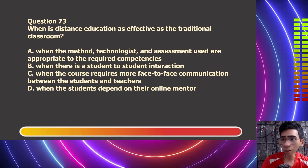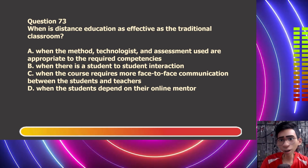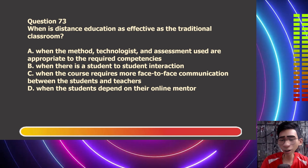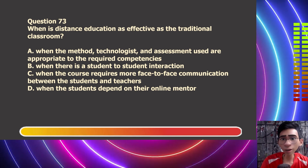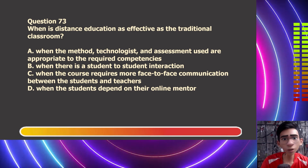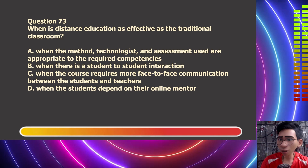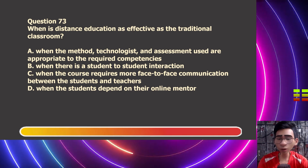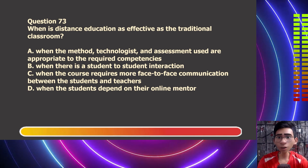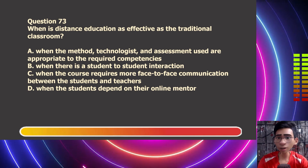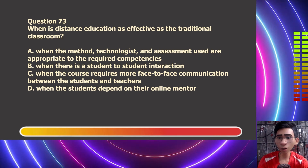Question number 73. When is distance education as effective as the traditional classroom? Letter A, when the method, technologies, and assessment used are appropriate to the required competencies. Letter B, when there is student-to-student interaction. Letter C, when the course requires more face-to-face communication between the students and teachers. Letter D, when students depend on their online mentor.